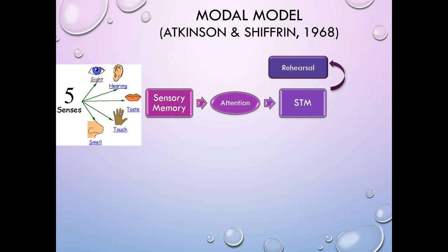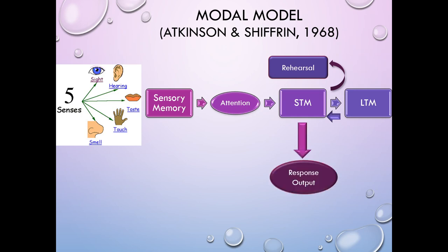We can keep information active in short-term memory through a process called rehearsal. If you keep thinking about the same material over and over again, it'll keep that material active in your short-term memory store. With an appropriate encoding strategy, you can move information from short-term memory into long-term memory. And anything that's in your long-term memory — if you want to think about it — you have to pull it back into short-term memory. Anything requiring a response output also means that information has to have been moved into short-term memory.